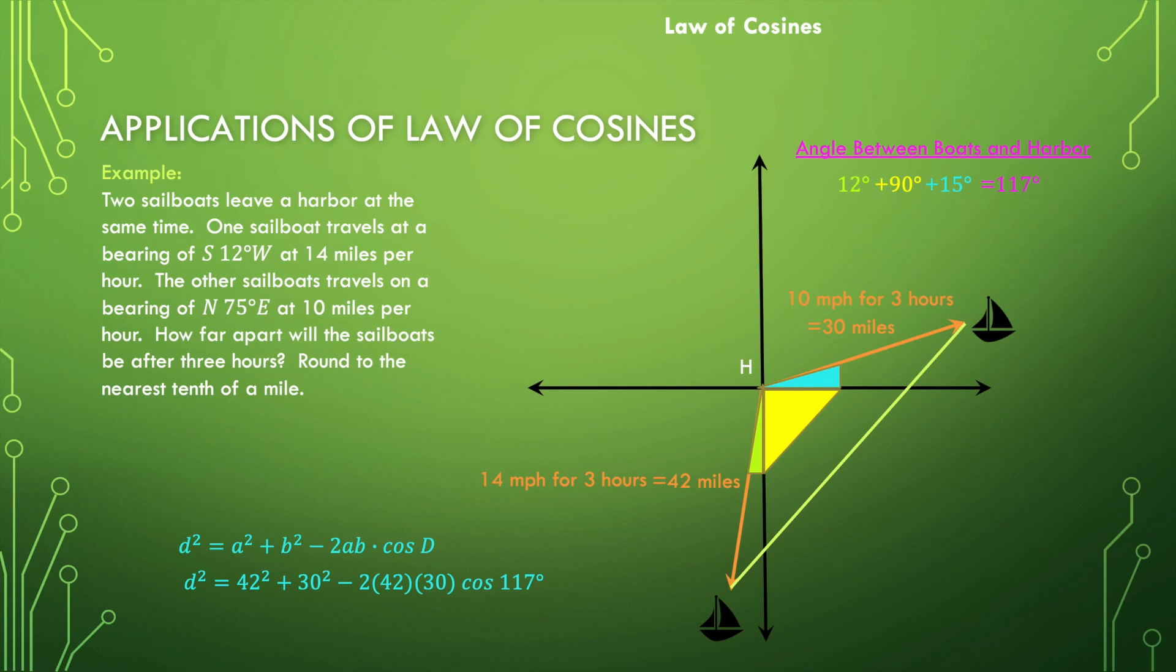It's just a matter of using your calculator to calculate this, making sure that your calculator is in degrees because we're taking the cosine of a degree measure. Then we would find that we are looking at the distance being the square root of 13,808.06. When we take that square root, we get about 61.7 miles. That makes a lot of sense.